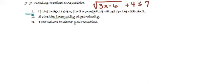Step one is to check whether the index is even, which it is in this case being a 2. Then you must find non-negative values for the radicand.